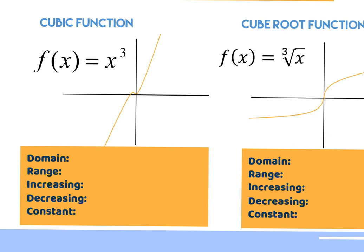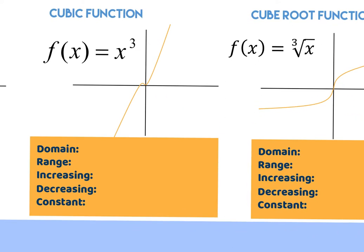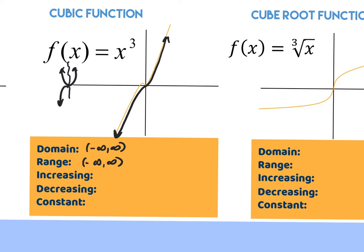The cubic function — x to the third — passes through zero, zero. It's like a parabola with one side flipped upside down: if you took the U and broke it at the middle, then flipped the left side down, that's the cubic shape. There are no restrictions on domain because you can cube anything — so domain is negative infinity to positive infinity. The range is also negative infinity to positive infinity. From left to right, this is continuously increasing — from negative infinity to positive infinity — with no decreasing or constant.